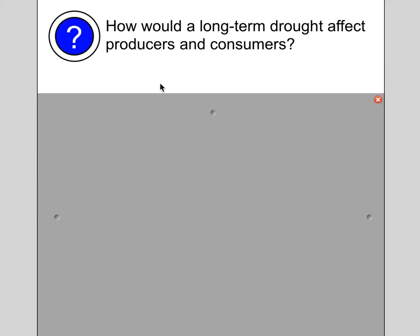Question: how would a long-term drought affect producers and consumers? Many producers would die because they don't have water, and then fewer plant-eating consumers would survive and reproduce, affecting food availability to other consumers.